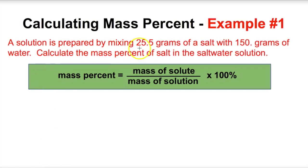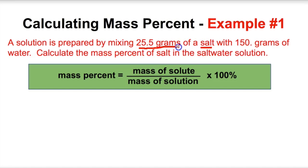In this first example: a solution is prepared by mixing 25.5 grams of salt with 150 grams of water. Calculate the mass percent of salt in the solution. The salt is the solute, so the mass of the solute is 25.5 grams. The solvent has a mass of 150 grams. The mass of the entire solution is 25.5 plus 150, which equals 175.5 grams.